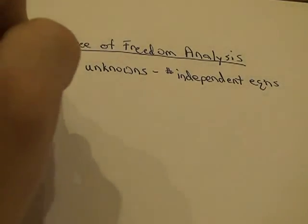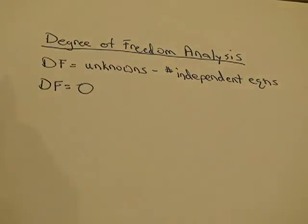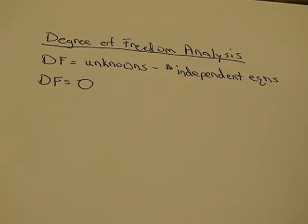So, if your degrees of freedom are equal to zero, what that means is that the problem is solvable and that you have enough independent equations to solve for the unknowns that you're looking to find.